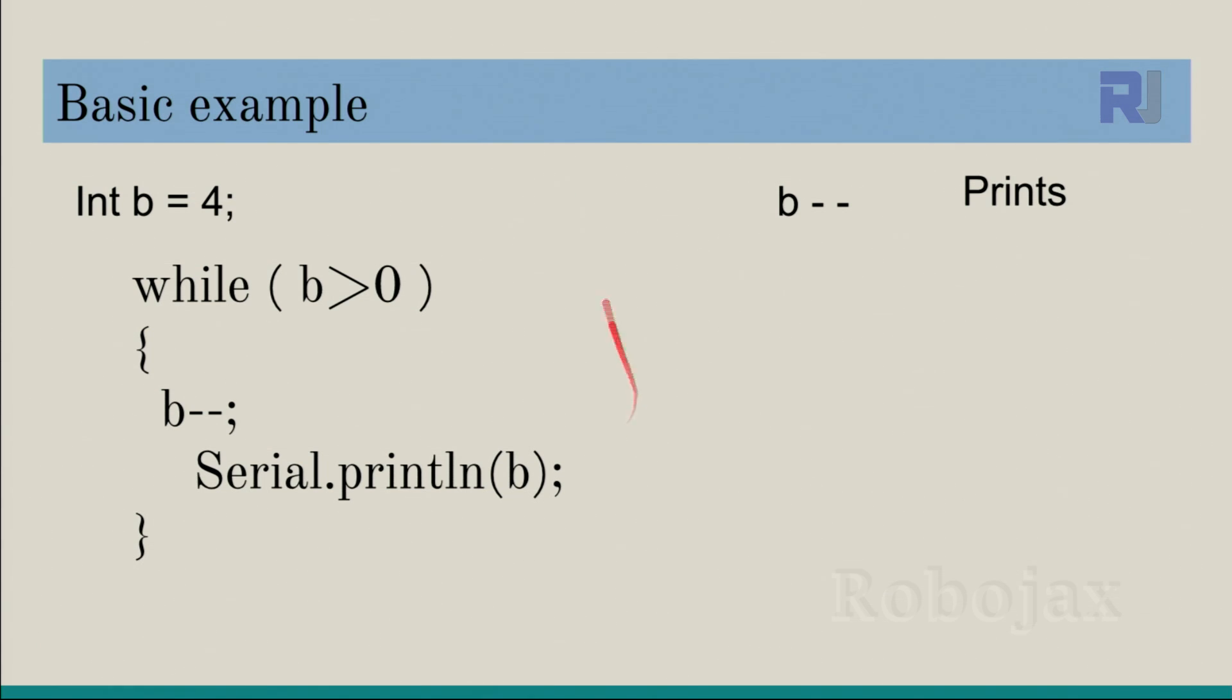Here is a very basic while loop example. We have a variable b of type integer and the value is 4. Now we have a while loop that says while b is greater than zero, do this. What it means is that when b is greater than zero, at the moment b is greater than zero, then it decrements, which means subtract one from b, and then print b. When it reaches here, it goes back.